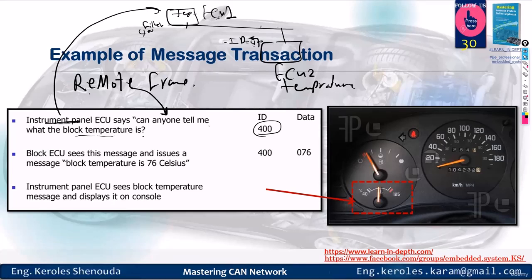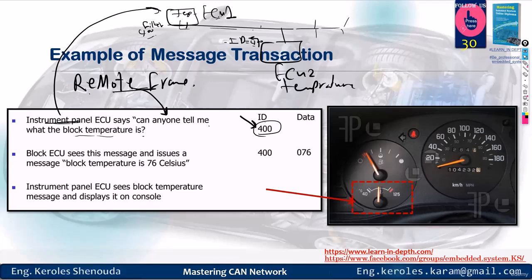What does sending a remote frame mean? The remote frame means I'm requesting anyone to send with ID 400 — please send me the data you have. I send a remote frame packet, and this remote frame goes to any ECU. If you receive the remote frame, it shows in the message that it's a remote frame. Then you check its ID — you find ID 400. You know that it's requesting from you, because you are the ECU programmed to send with ID 400, so you send a packet with ID 400 including the temperature data.